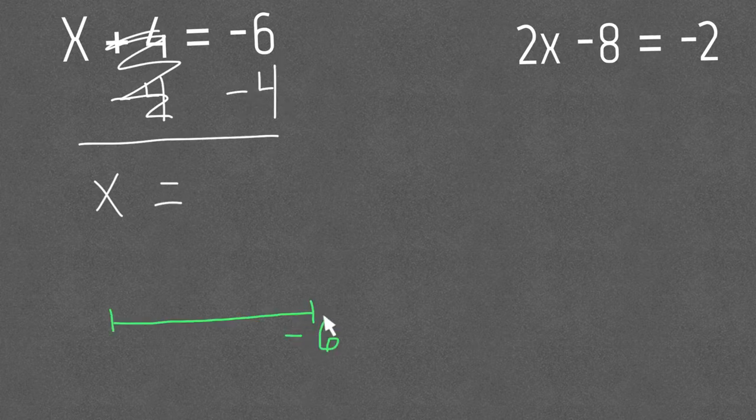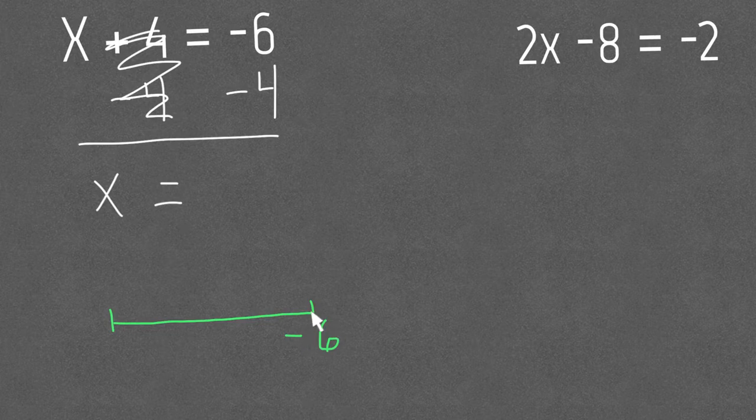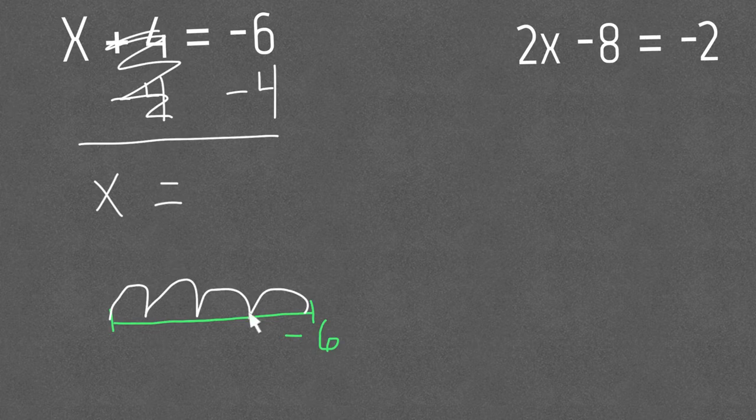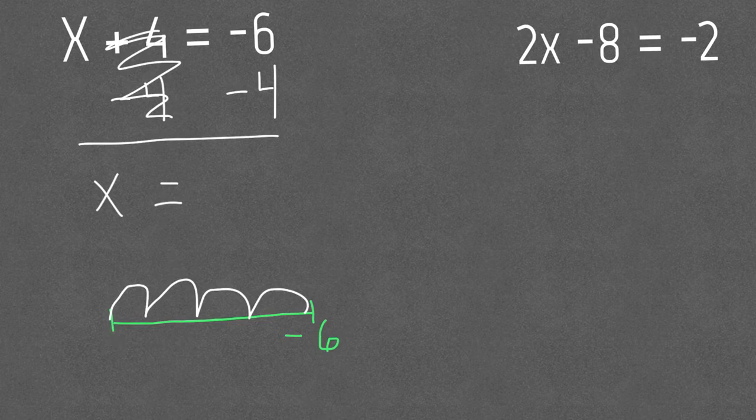So remember if you're on a number line that would start us at negative 6 and then subtraction tells us to go to the left four times. So we would jump over 1, 2, 3, and 4 and then by counting backwards I know I'd be negative 7, negative 8, negative 9, and negative 10. So our x would have equaled negative 10.